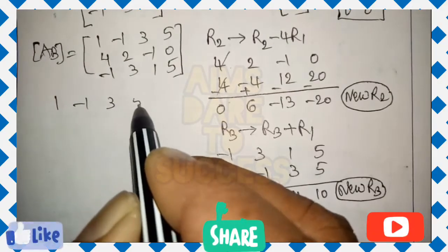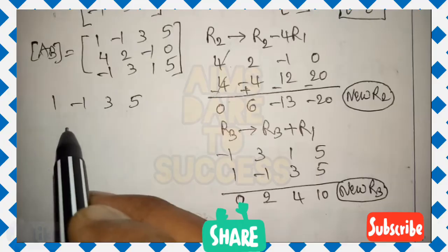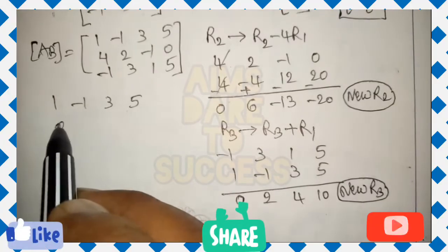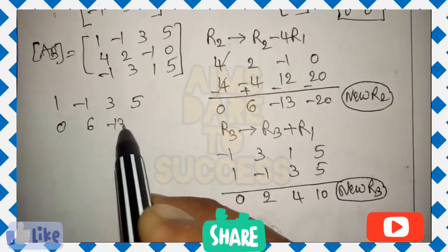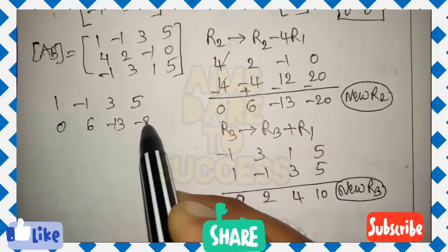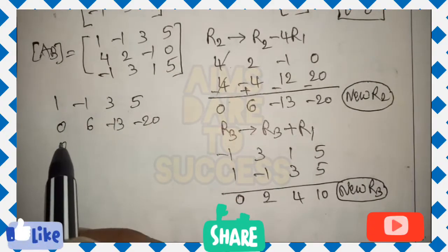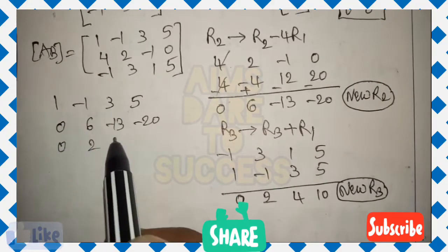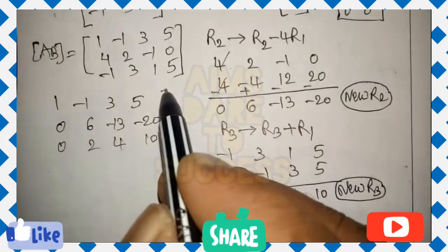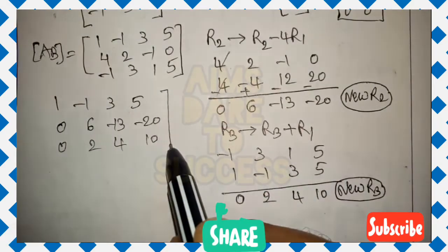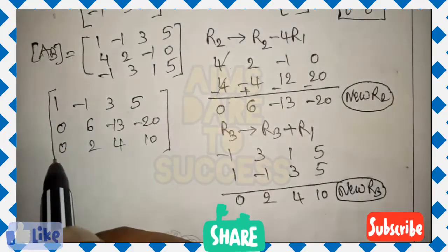Rewrite the new matrix: Row 1 stays as 1, minus 1, 3, 5. New R2 is 0, 6, minus 13, minus 20. New R3 is 0, 2, 4, 10. We have achieved 1 and 0s in the first column. Next target: make the second element of row 3 equal to 0 using row 2.